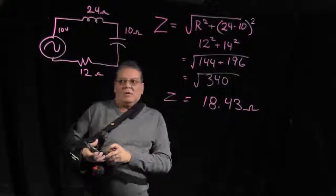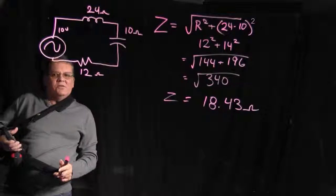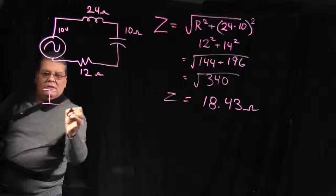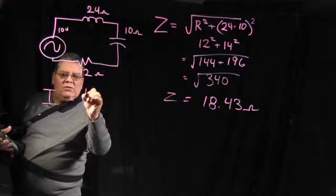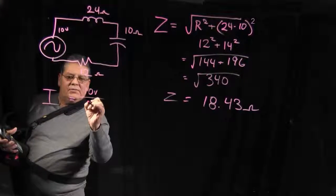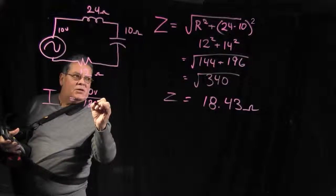Okay. So now if you wanted to work some Ohm's law with that and you wanted to find out your total current in your circuit, you would use your voltage which is 10 volts of your supply, and you would divide that by your impedance, in this case 18.43 ohms.